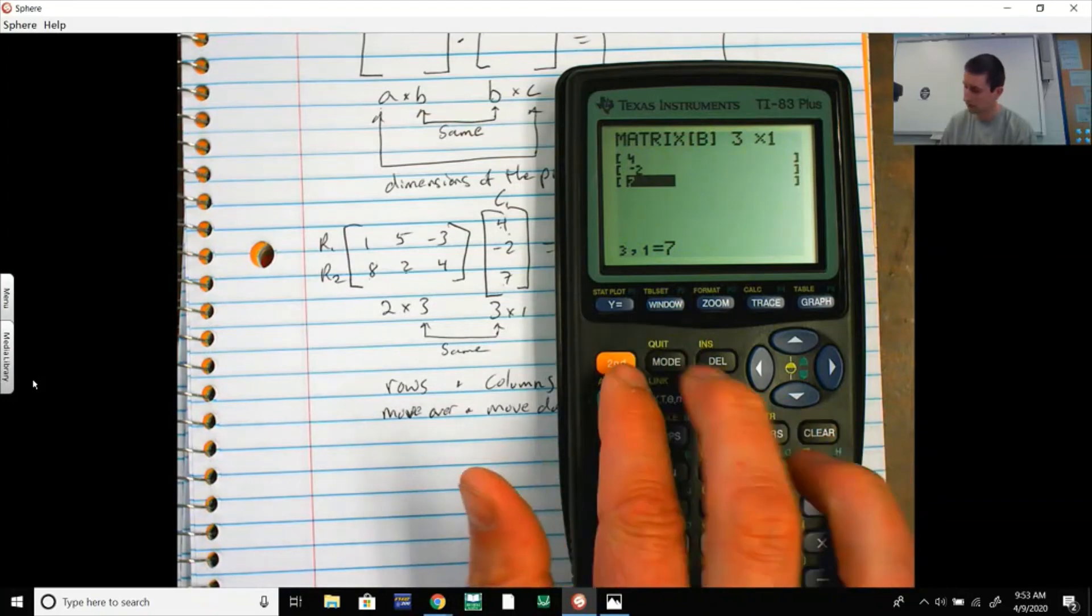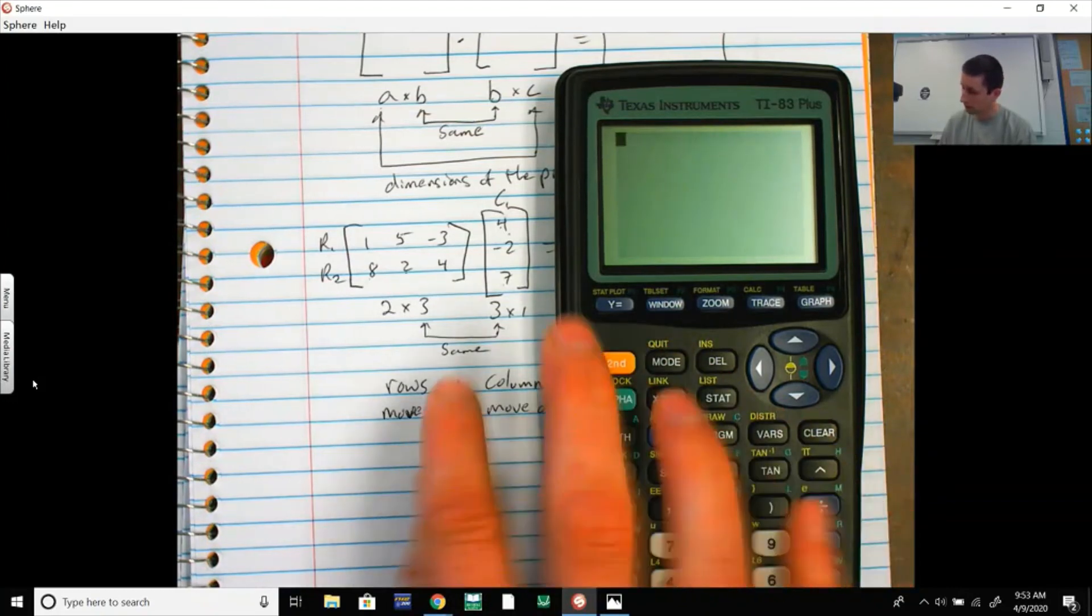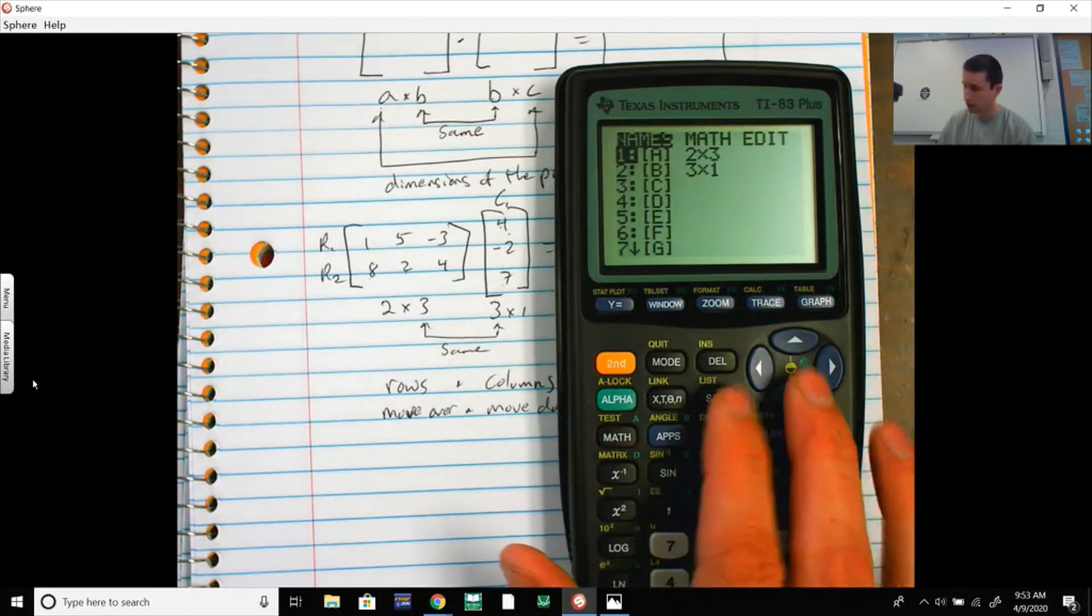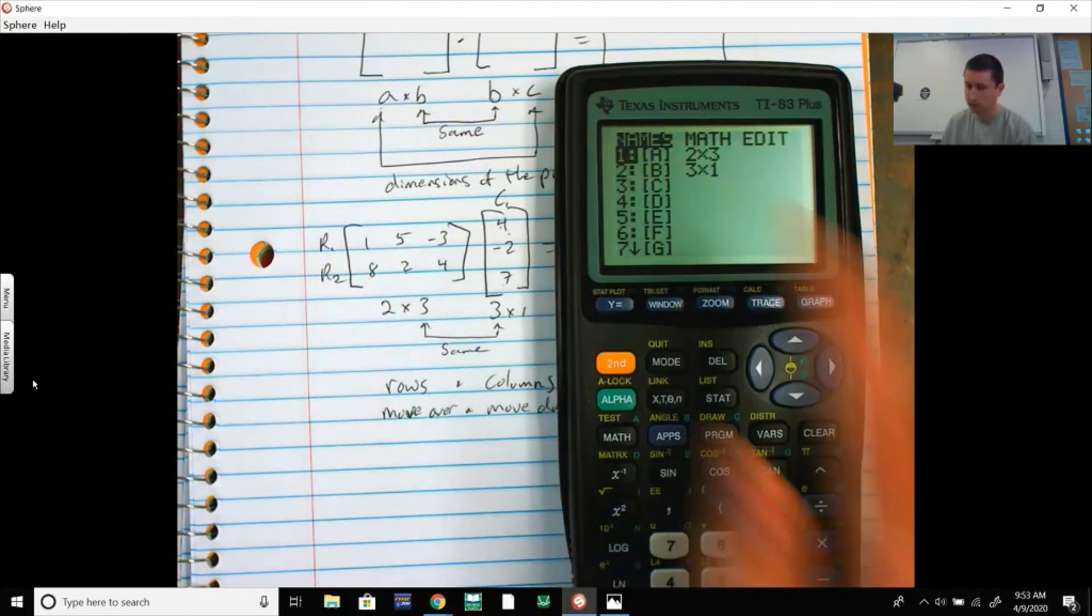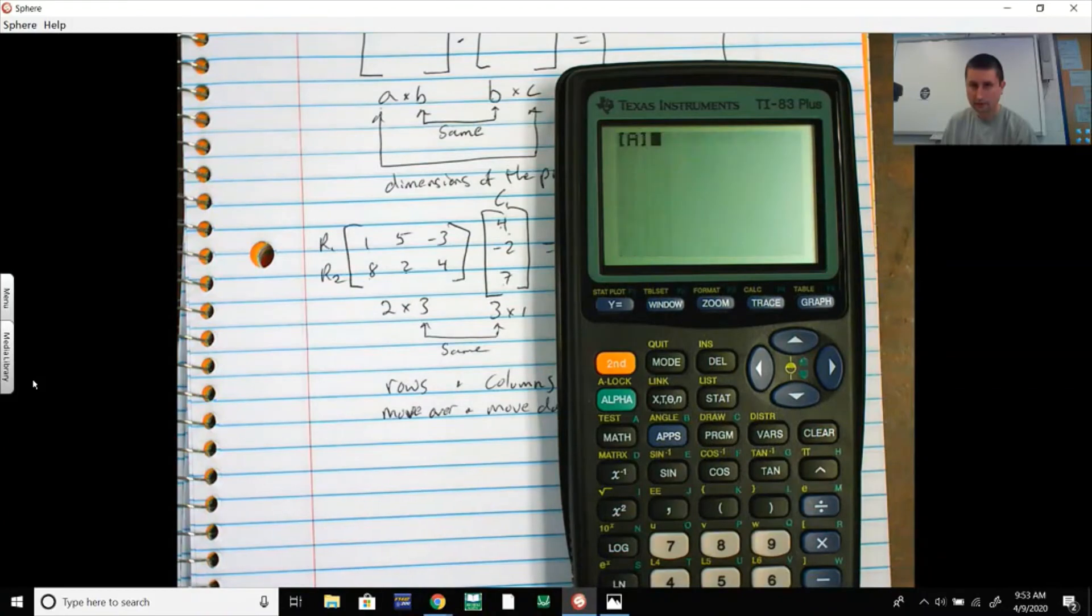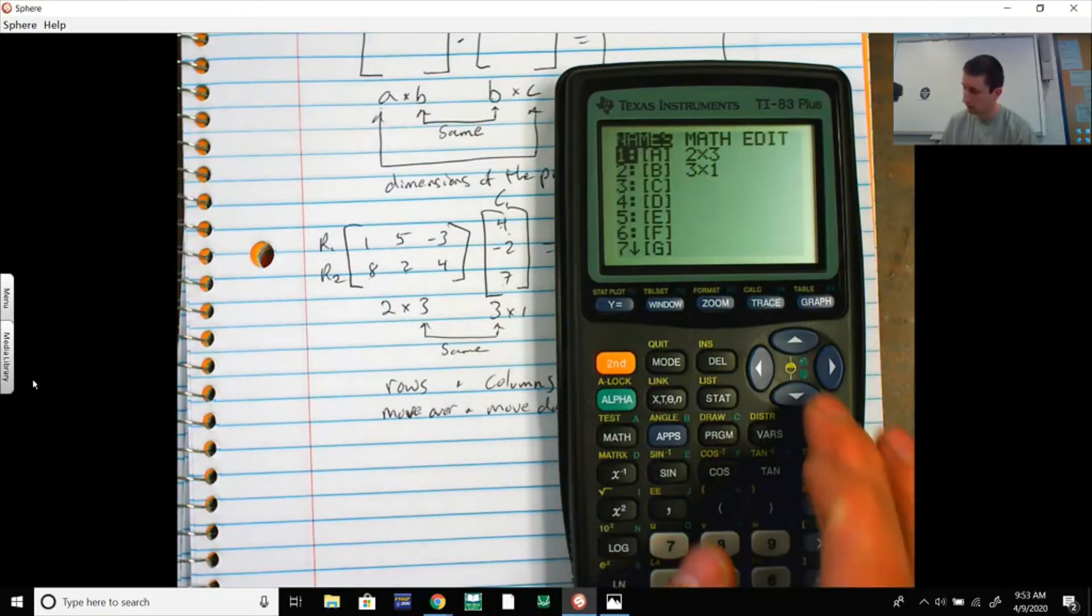I'm ready for my multiplication. If I take Matrix A—so now I'm not going to edit, I'm just going to name Matrix A, Enter. It brings it to my home screen, times Matrix B.